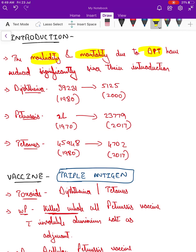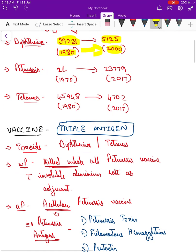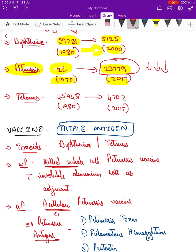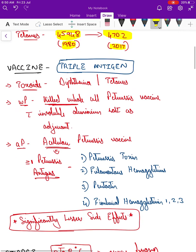For example, diphtheria had around 39,231 cases in 1980, which reduced to just around 5,000 cases in 2000. For pertussis, 2 lakh cases in 1970 reduced to around 23,779 by 2017. Even for vaccinated individuals, the severity of disease is very low. For tetanus, around 45,000 cases in 1980 reduced to 4,700 cases in 2017.